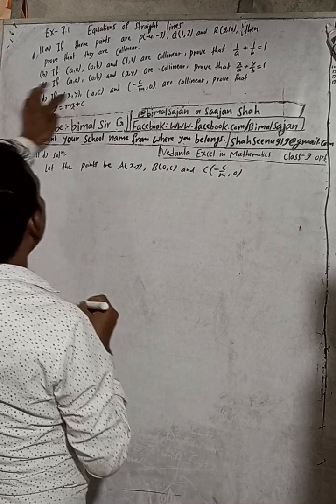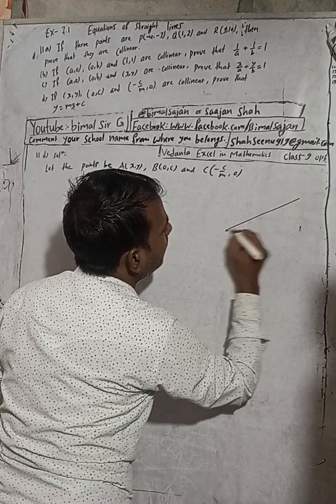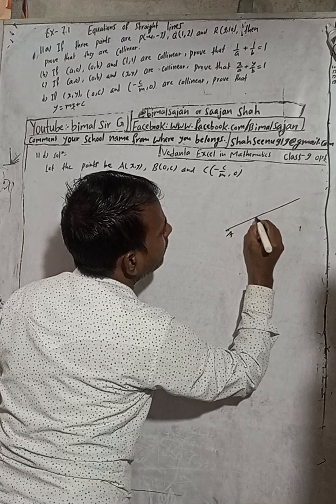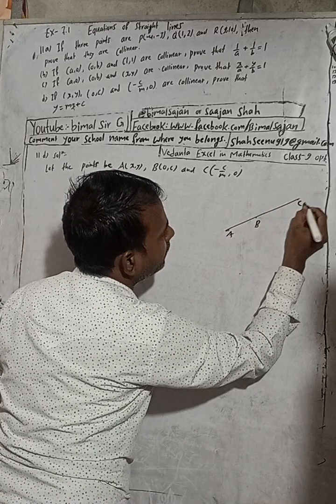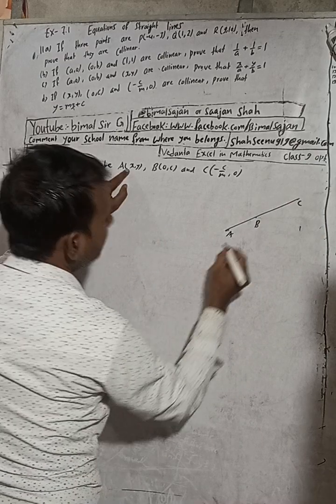Now the question tells you if these three points are collinear. Collinear means they are in the same line. Here is A, B, and C - all are in the same line, so they are collinear.